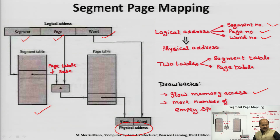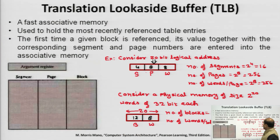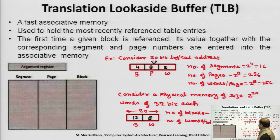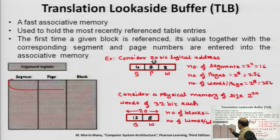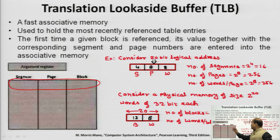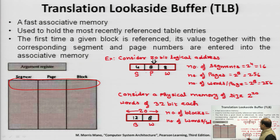To avoid this drawback, a fast associative memory concept called the Translation Lookaside Buffer (TLB) can be used. In TLB, the segment number, corresponding page number, and block number are stored together in a single row of the table, allowing direct lookup of the block number from the segment and page number in one access.